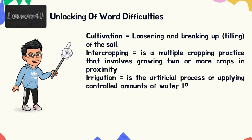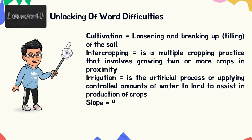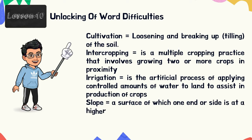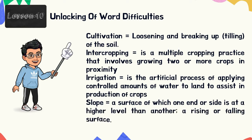Cultivation is defined as loosening and breaking up, or tilling the soil. Intercropping is a multiple cropping practice that involves growing two or more crops in proximity. Irrigation is the artificial process of applying controlled amounts of water to land to assist in production of crops. And the last one is Slope — a surface of which one end or side is at a higher level than another; a rising or falling surface.